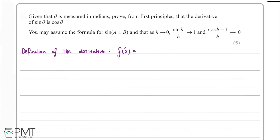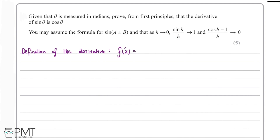In this question we're given that theta is measured in radians and we're being asked to prove from first principles that the derivative of sine theta is equal to cos theta. We're given some information about what happens to certain things as h tends to zero.